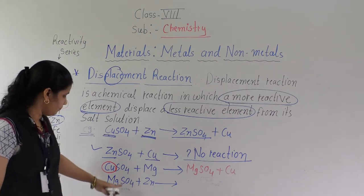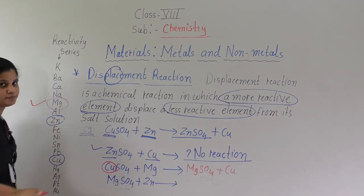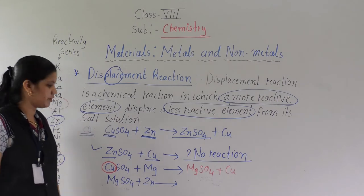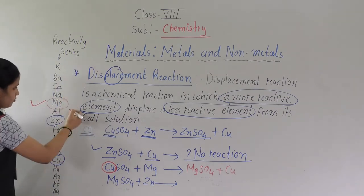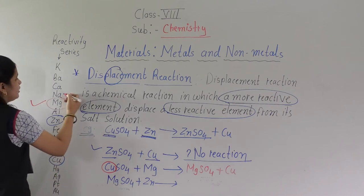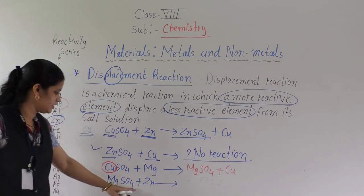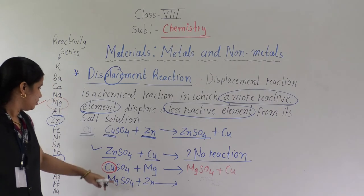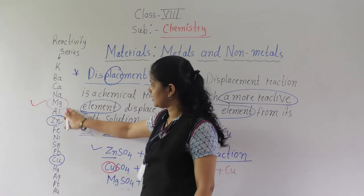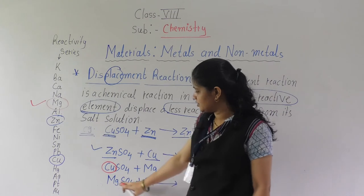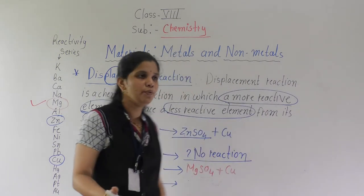One more example: MgSO4 plus Zn. Now, magnesium is here and zinc is here in the reactivity series. Which one is more reactive? Zn is less reactive than Mg. So can Zn take the place of Mg? No, because Zn is less reactive. According to the definition, only a more reactive element can displace a less reactive element. Since Zn is less reactive than Mg, here there is no reaction.